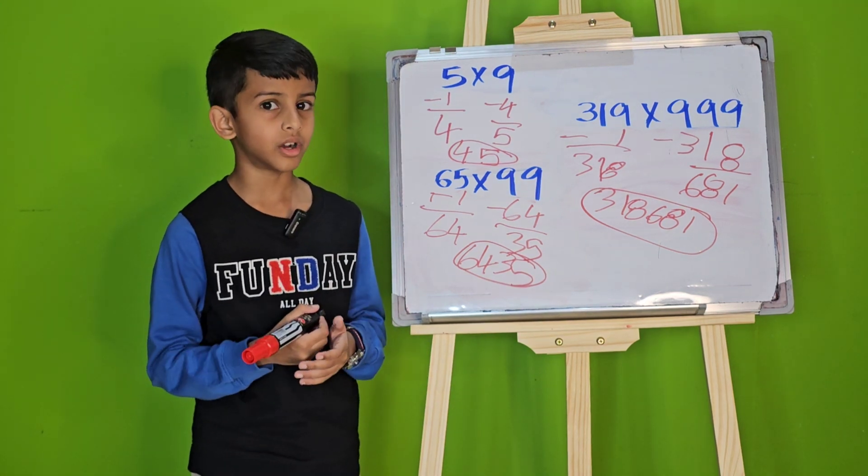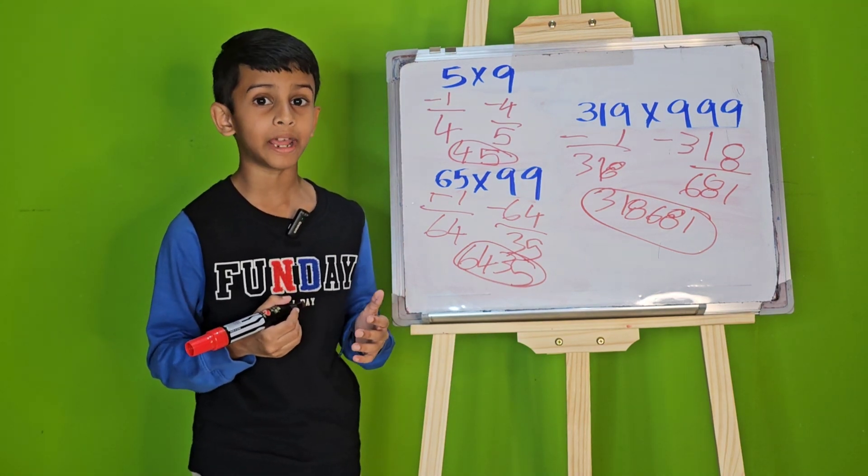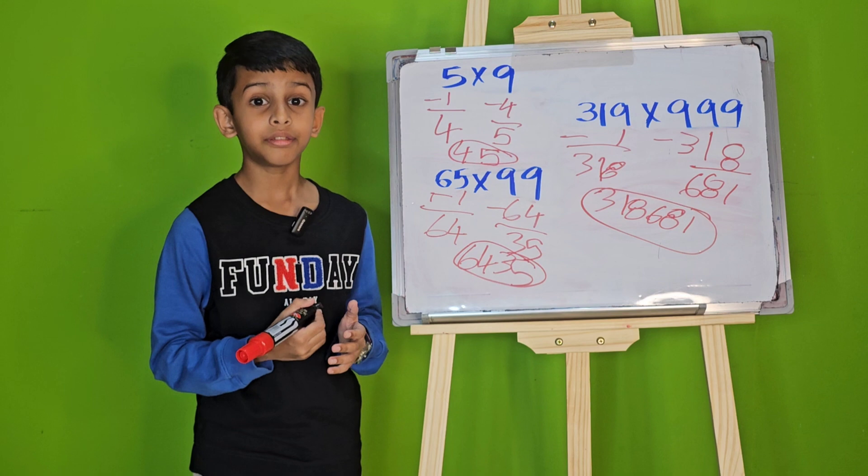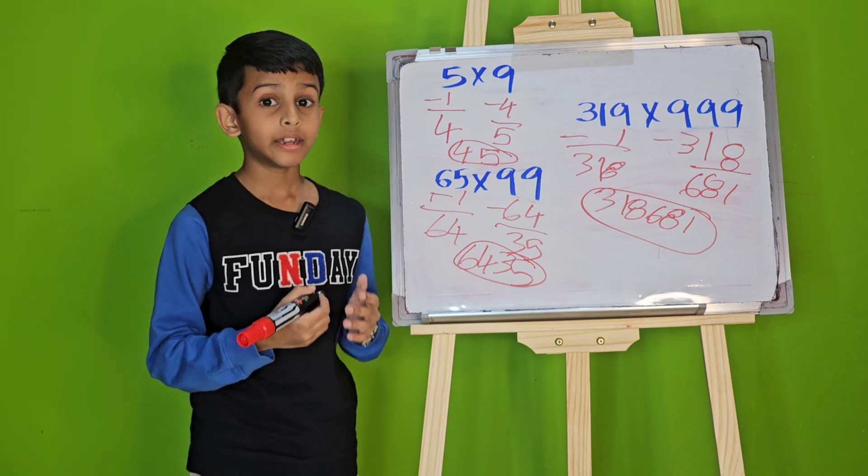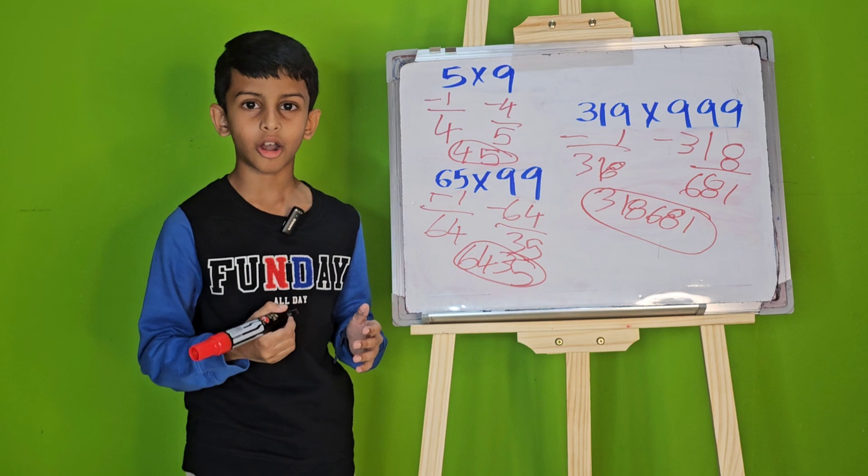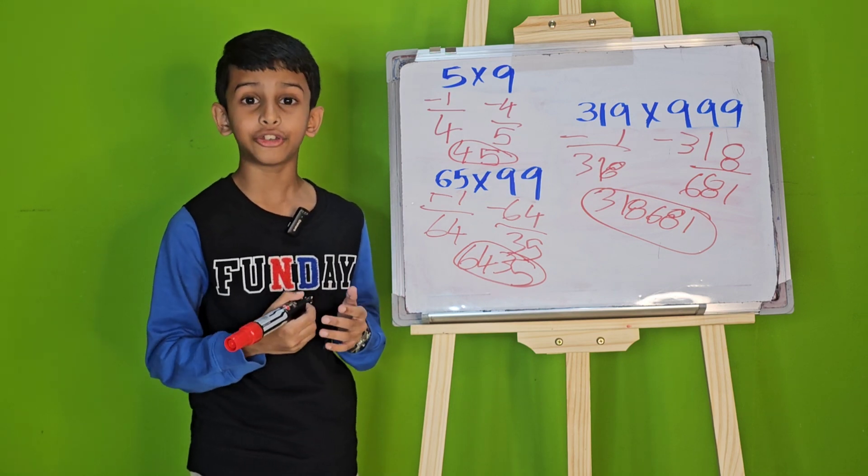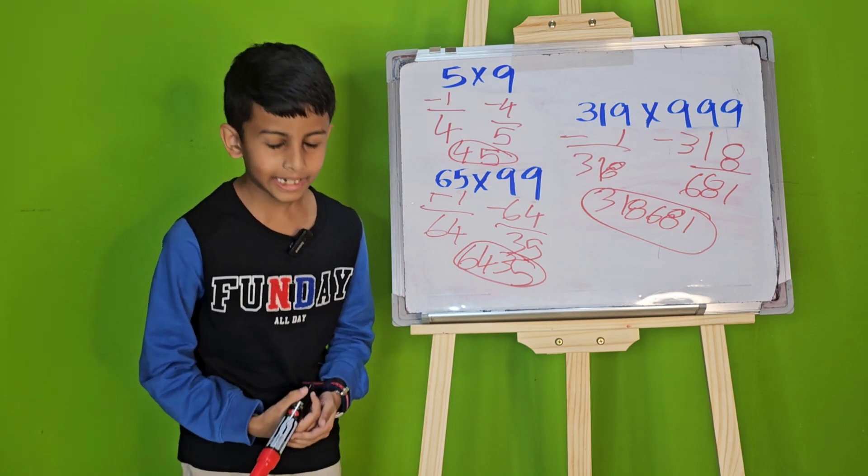Now, this trick only works if the number that we are multiplying has the same or less number of digits than 9, 99, 999, and so on. I hope you all enjoyed this fun math trick. Thanks for watching.